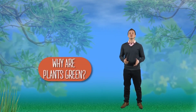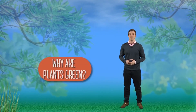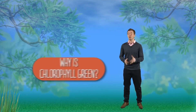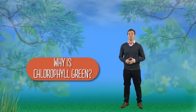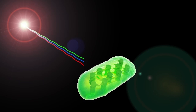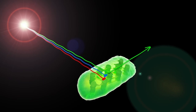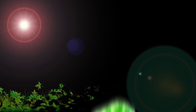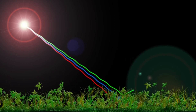So, why are plants green? Well, it is because they contain chlorophyll. But why is chlorophyll green? Well, not all the wavelengths of light are absorbed. Some of them are reflected, and it is mainly the green wavelength that is reflected from chlorophyll, which is why chlorophyll and plants appear green.